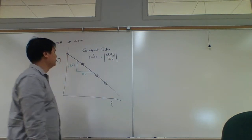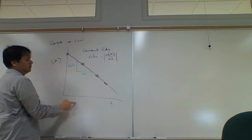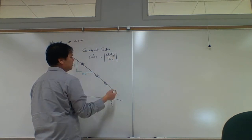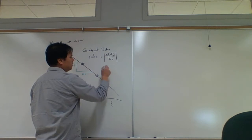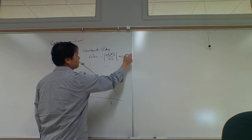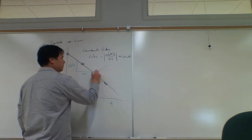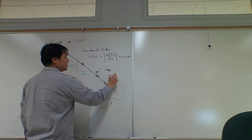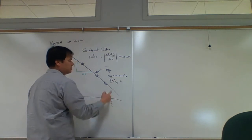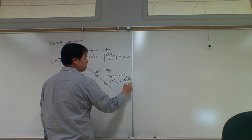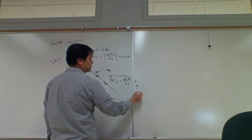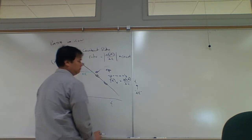We call delta A our Y and delta T our X. So we can get an equation for Y final. The equation for this line is just Y equals MX plus B. The concentration of A at time T is equal to the slope — delta A over delta T — times T, the total time interval, plus A at time zero.